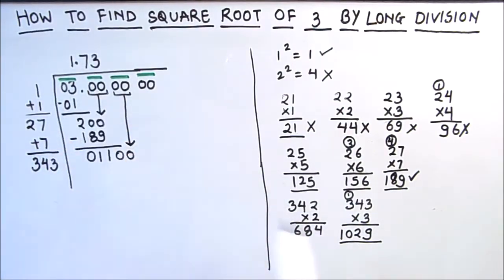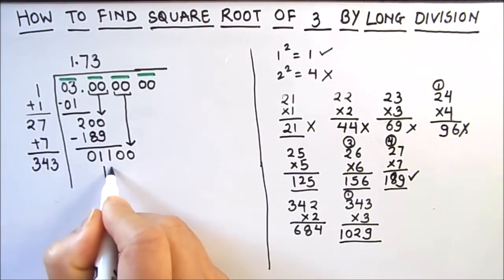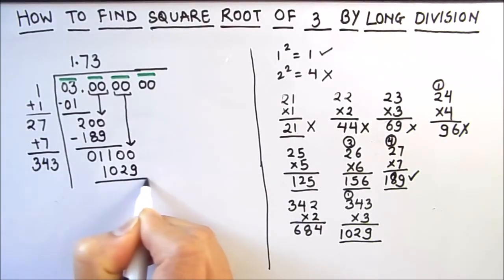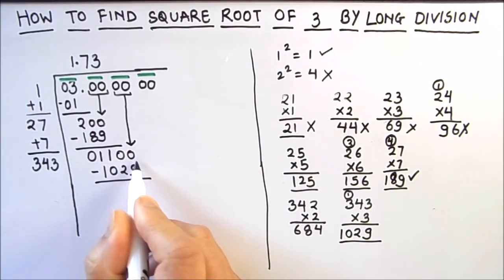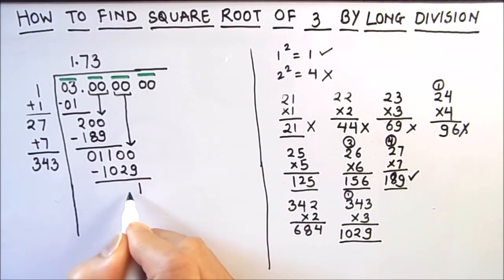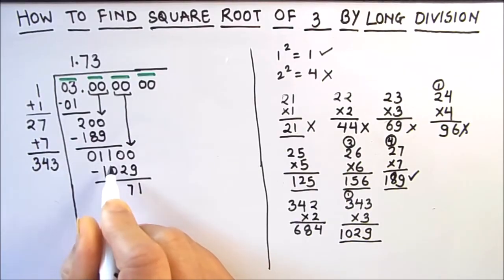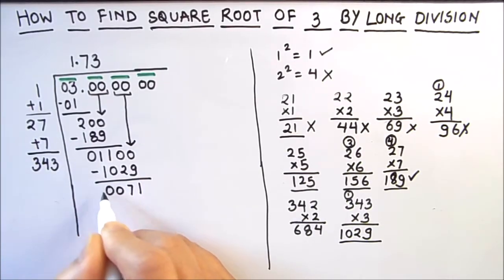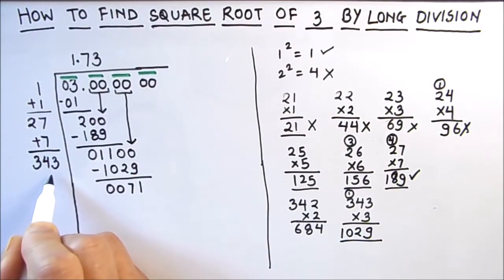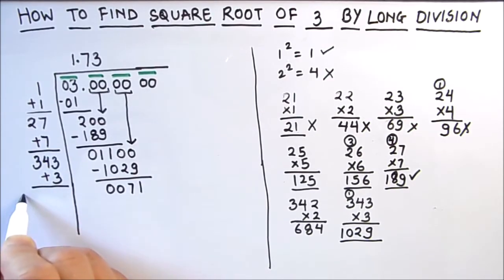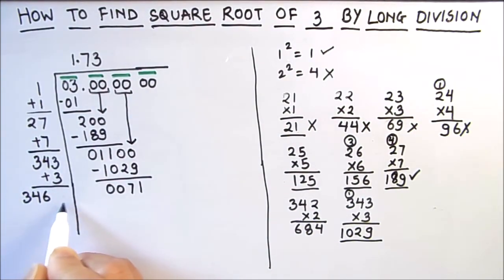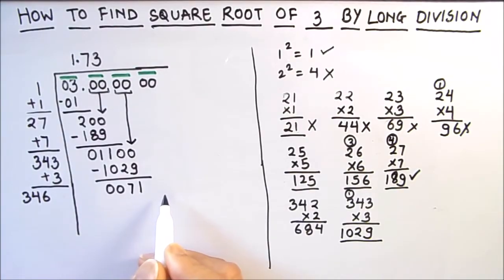343 times 3 is 1029. Now we subtract 1029 from 1100: 10 minus 9 is 1, 9 minus 2 is 7, 0 minus 0 is 0, giving remainder 71. The next divisor base is formed by adding 3 to the units place: so the new divisor digits are 3, 4, 6 and we need to annex one digit based on the next dividend.